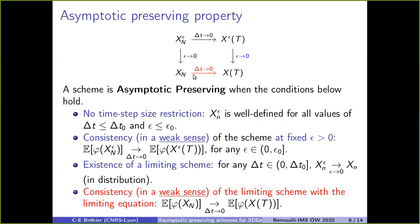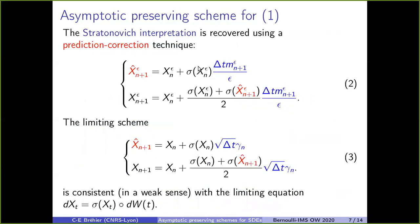What we present now is how to have a scheme where the red arrow is correct, and to get the Stratonovich interpretation in the example considered so far, we use a prediction-correction technique. First we compute a predicted value at step N+1 — exactly what was computed first, which is consistent with the Ito interpretation. Then we have a second correction step. We still get a limiting scheme because the quantity in blue converges to the quantity in blue below. This limiting scheme with the prediction-correction technique is now consistent with the correct SDE with the Stratonovich interpretation.